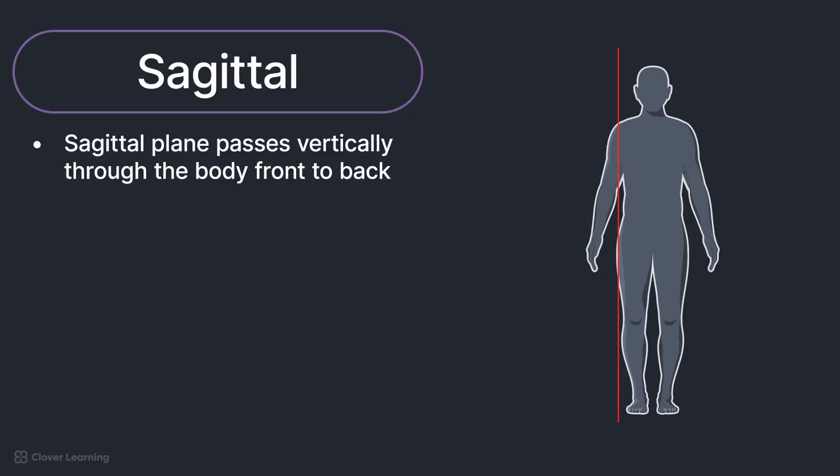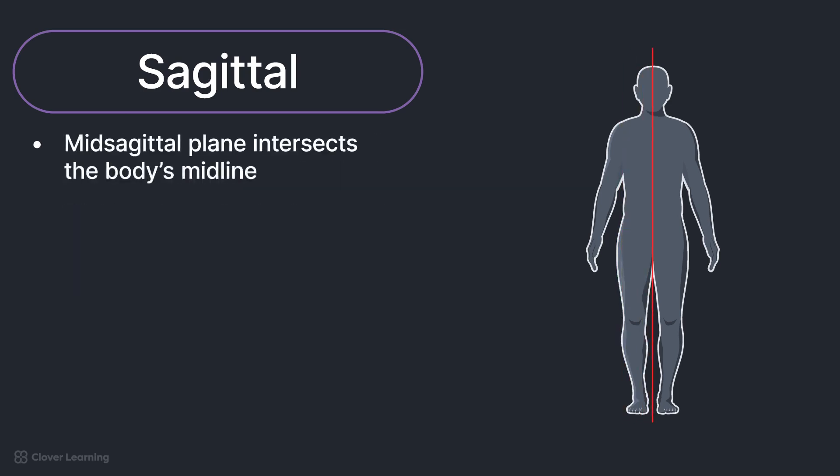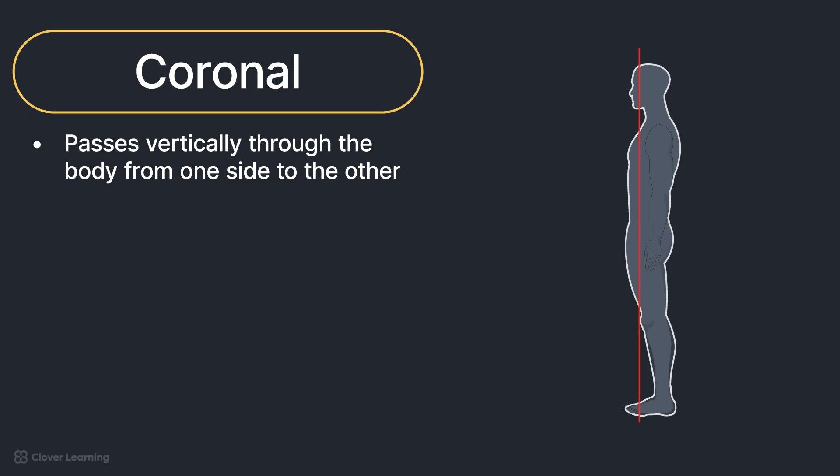The sagittal plane passes vertically through the body from the front to the back and divides the entire body or body part into right and left segments. The mid-sagittal plane is a distinct sagittal plane that intersects the body's midline, creating two equal halves on the right and left sides. The coronal plane passes vertically through the body from one side to the other and divides the entire body or a body part into anterior and posterior segments. The mid-coronal plane is a specific coronal plane that intersects the body's midline, creating equal anterior and posterior halves.